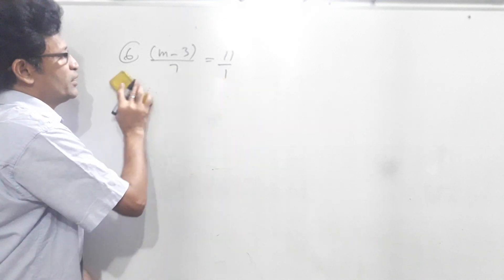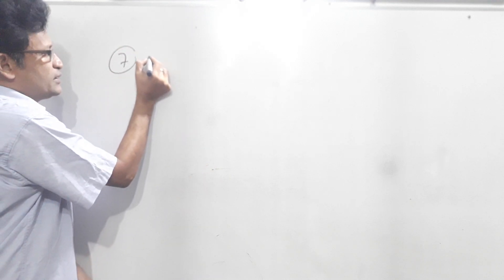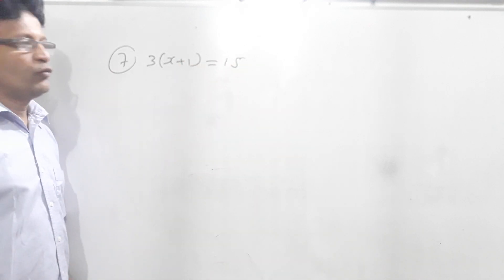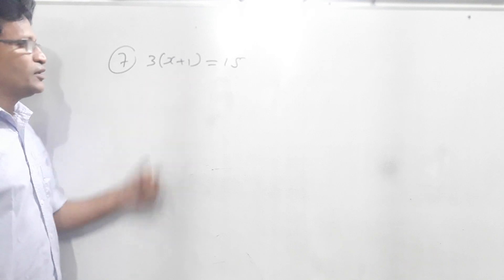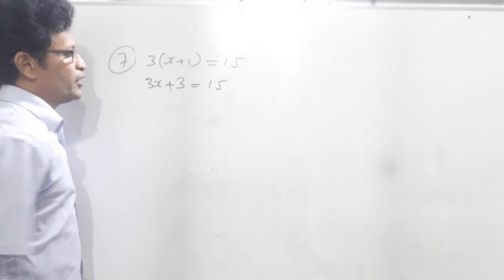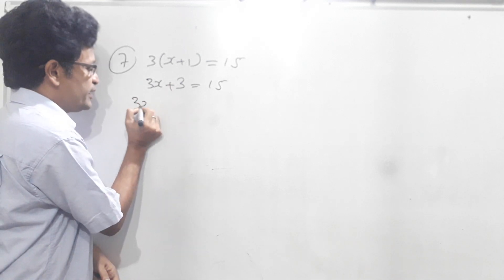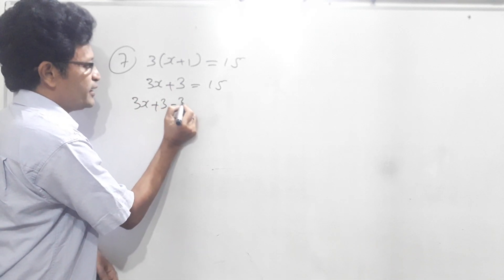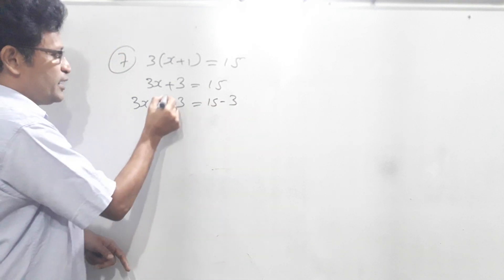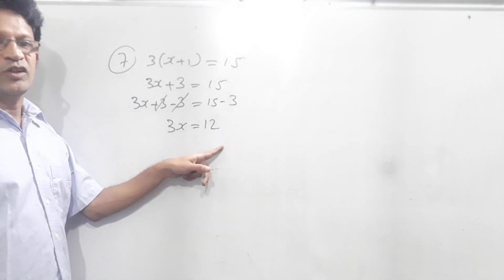Now we will do the next question. 7th question: 3 times (x plus 1) equals 15. Here what we have to do? We have to remove the brackets. So 3 times x is 3x, 3 times 1 is 3, equals 15. Now we have to get rid of this 3. So we have to subtract 3. Then 15 minus 3. Plus 3 and minus 3 cancel. Here 3x equals 15 minus 3, which is 12.